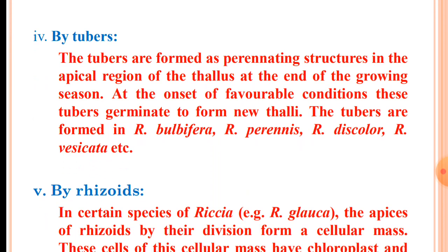The fourth method of vegetative reproduction is by tubers. Tubers are formed as perennating structures in the apical region of the thallus at the end of the growing season, when conditions are going to be unfavorable for the plant. These tubers, which contain the apical cell, on the onset of favorable conditions develop to form new thalli. For example, tubers are generally formed in Riccia bulbifera, Riccia perennis, Riccia discolor, Riccia vesicata, etc.